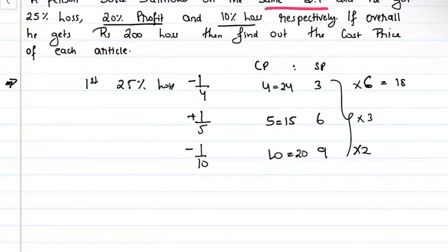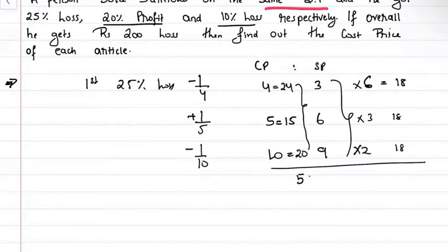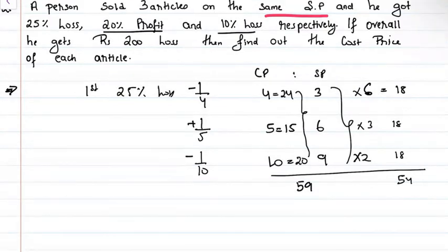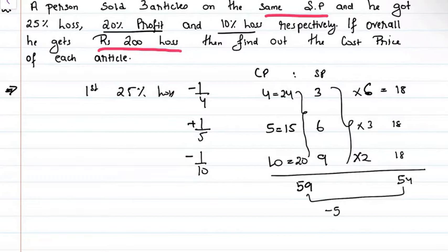For the second article, 20% profit means 1 by 5, so cost price is 5 and selling price is 6. For the third article, 10% loss means 1 by 10, so cost price is 10 and selling price is 9. Making the selling price the same: cost prices become 24, 15, and 20; selling prices each equal 18. Total cost price is 59 and total selling price is 54.